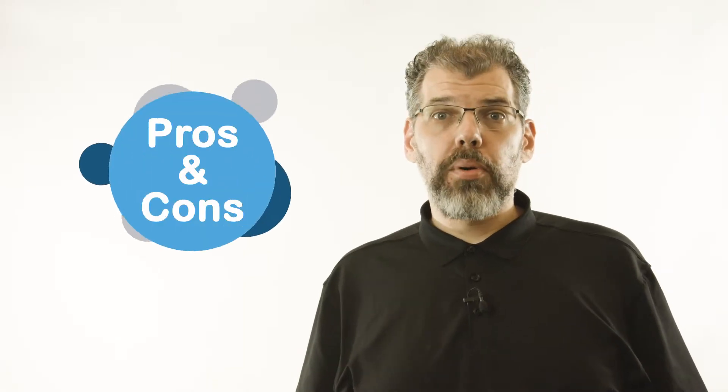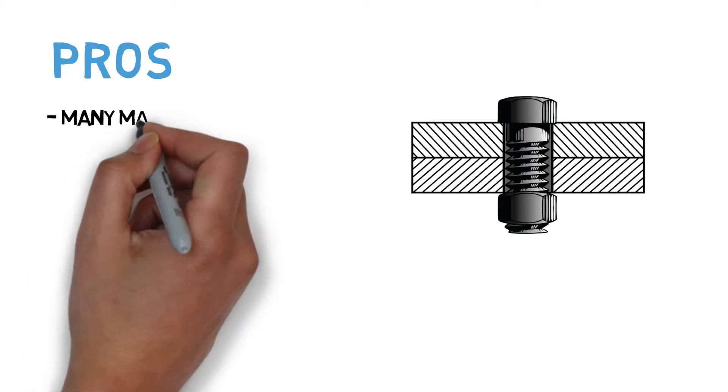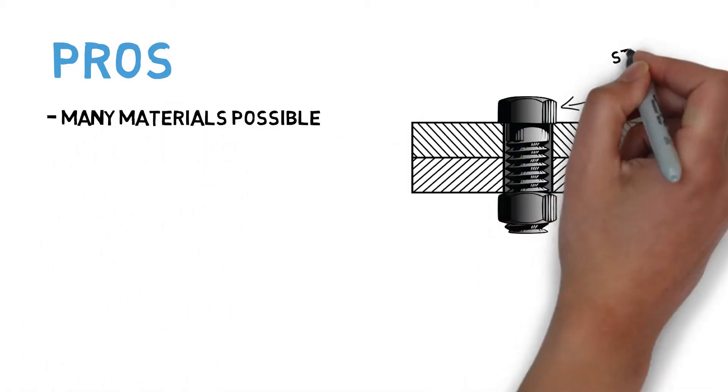There are a number of pros and cons to threaded fasteners to consider when designing a joint. On the pro side, threaded fasteners can be made out of a wide range of materials, including both high strength and low strength metal alloys.